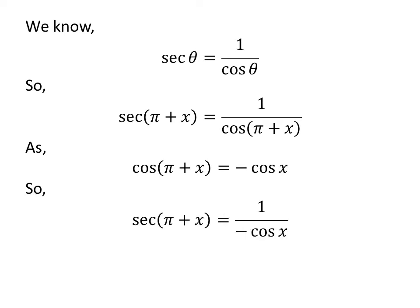Let us apply the above identity in the above expression of secant of pi plus x. So secant of pi plus x is equal to 1 upon minus cosine of x. We know 1 upon cosine of x is equal to secant of x. So secant of pi plus x is equal to minus secant of x.